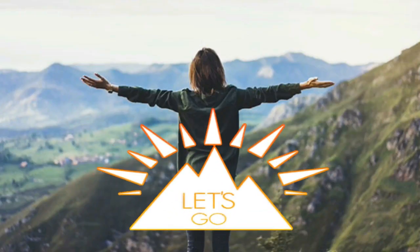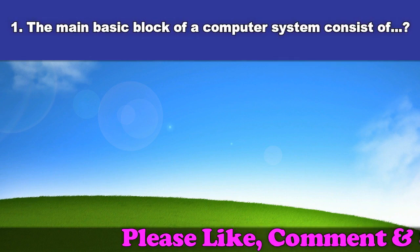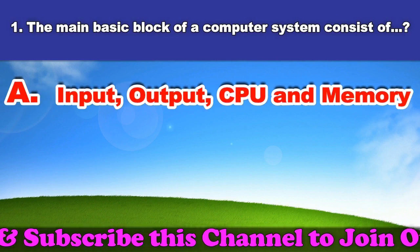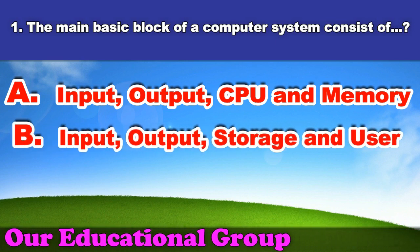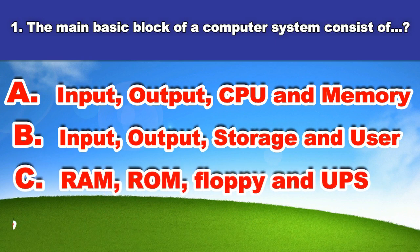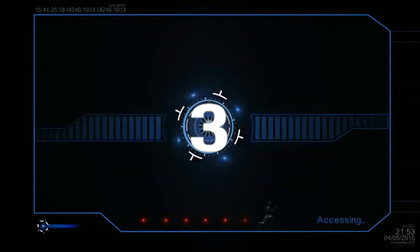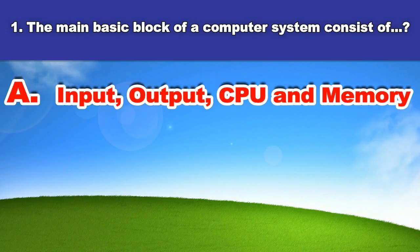First question: The main basic block of a computer system consists of. A. Input, output, CPU, and memory. B. Input, output, storage, and user. C. RAM, ROM, floppy, and UPS. D. RAM, hard disk, keyboard, and monitor. And the answer is input, output, CPU, and memory.